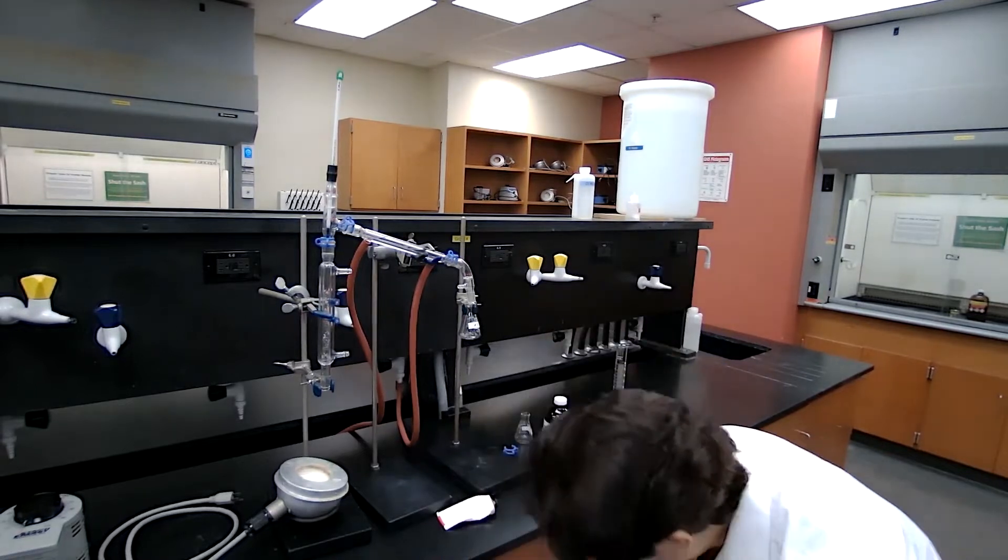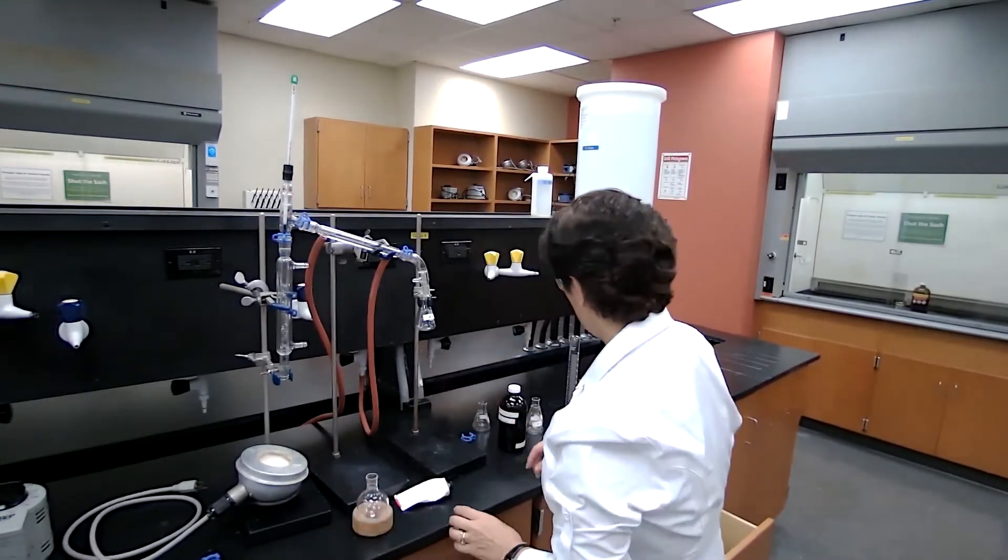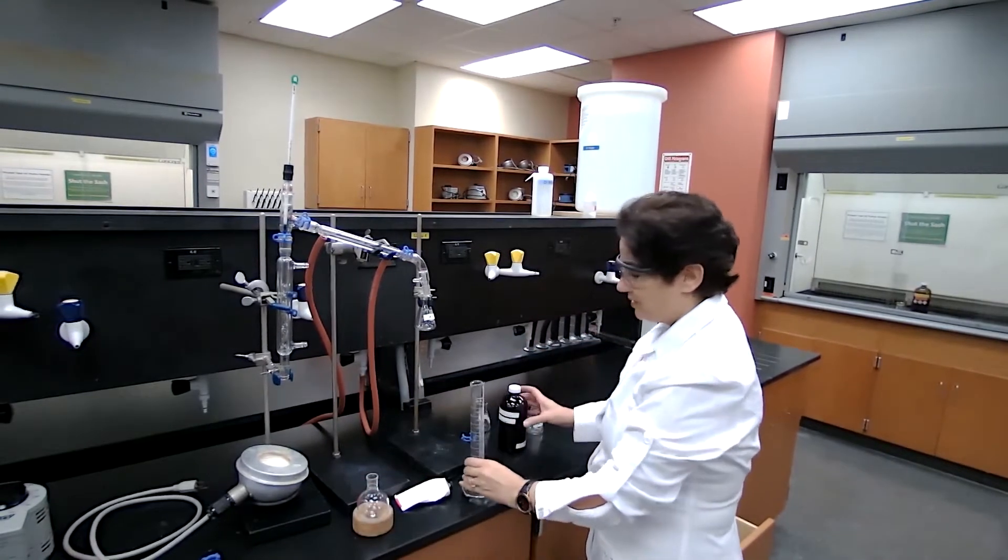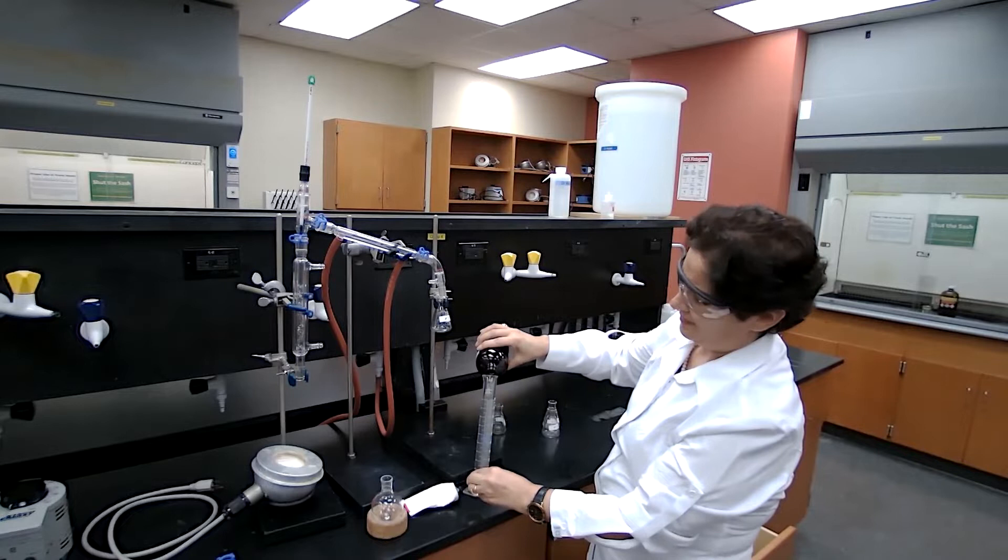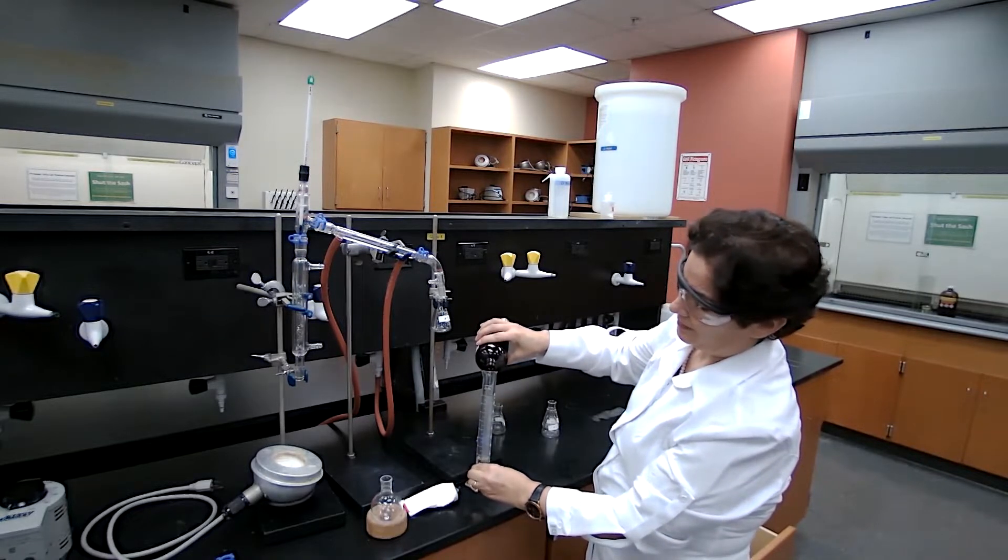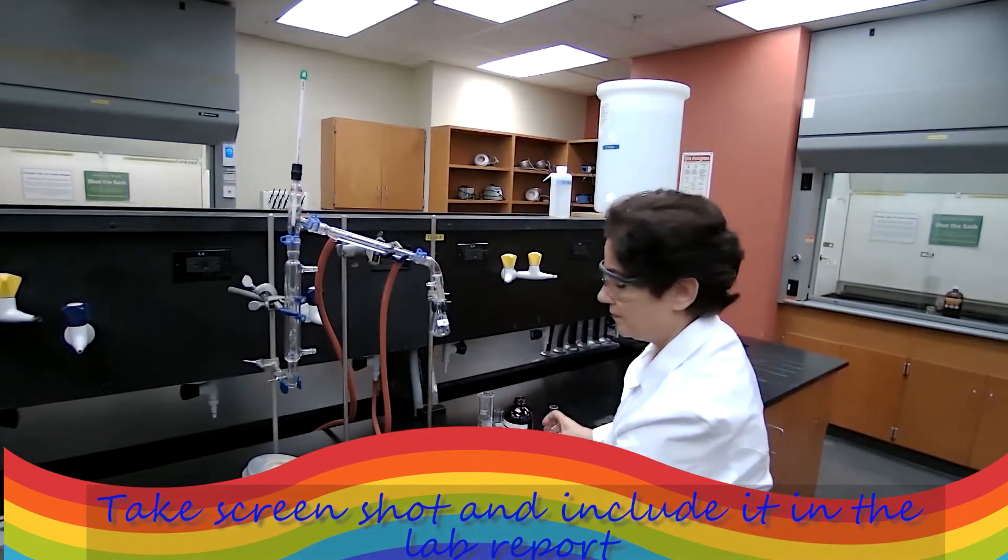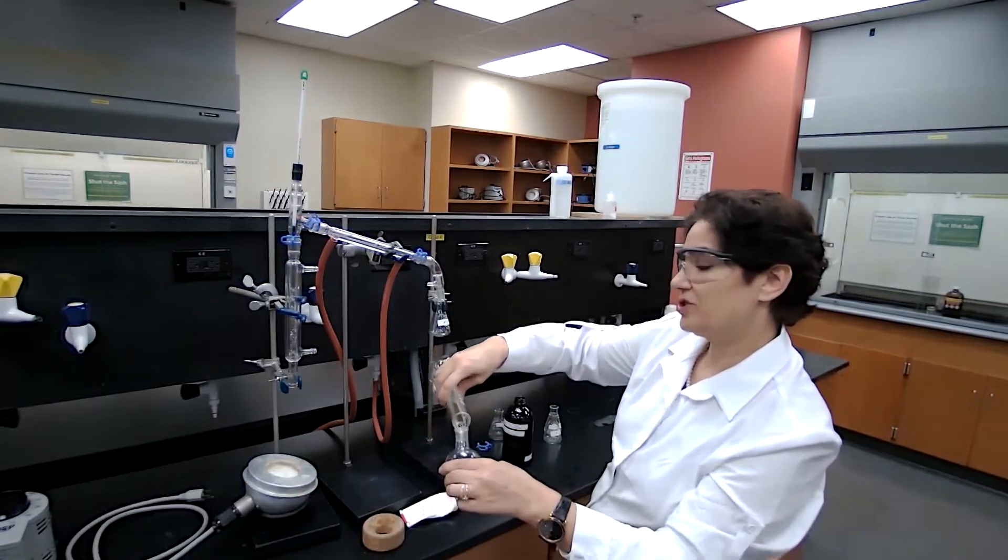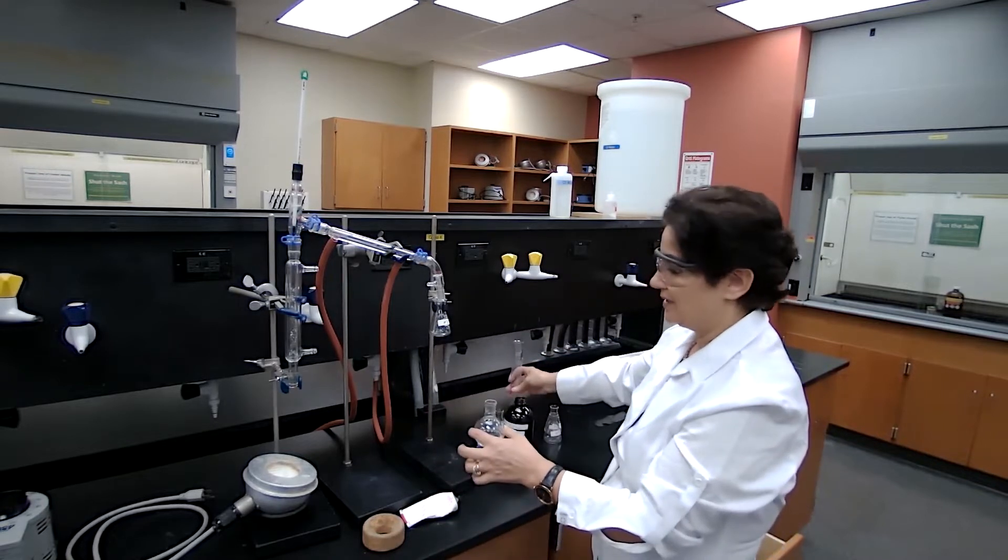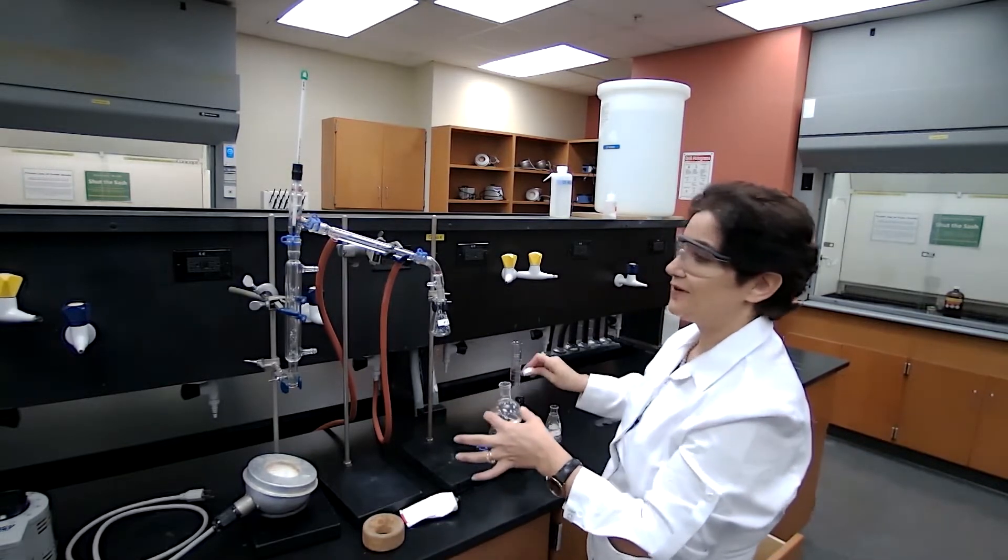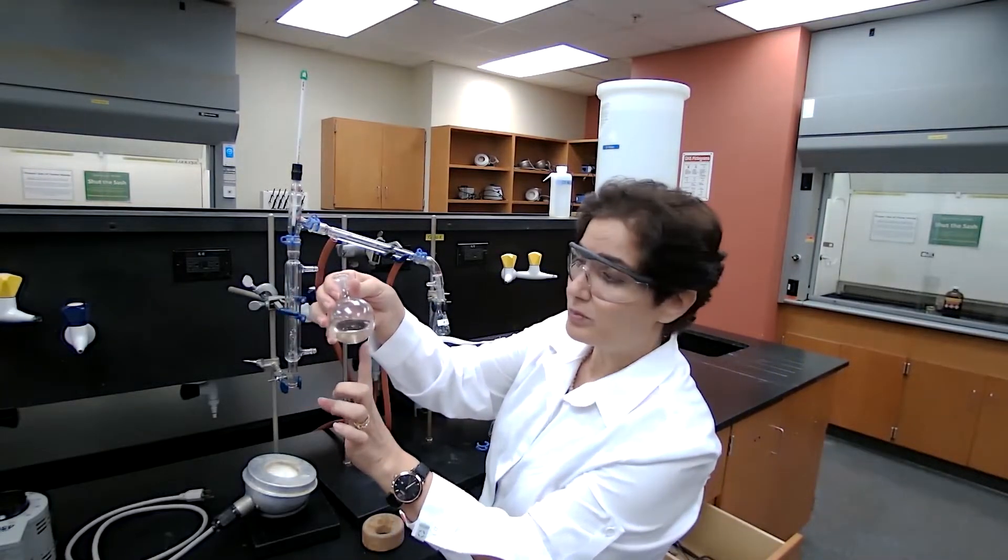I use my round bottom flask to support this flask. I will measure 30 milliliters of the mixture. This mixture is mixture of two liquids with different boiling points, but both of them are volatile. We are hoping that fractionating columns would allow us to separate. Make sure that we have three to four boiling chips.